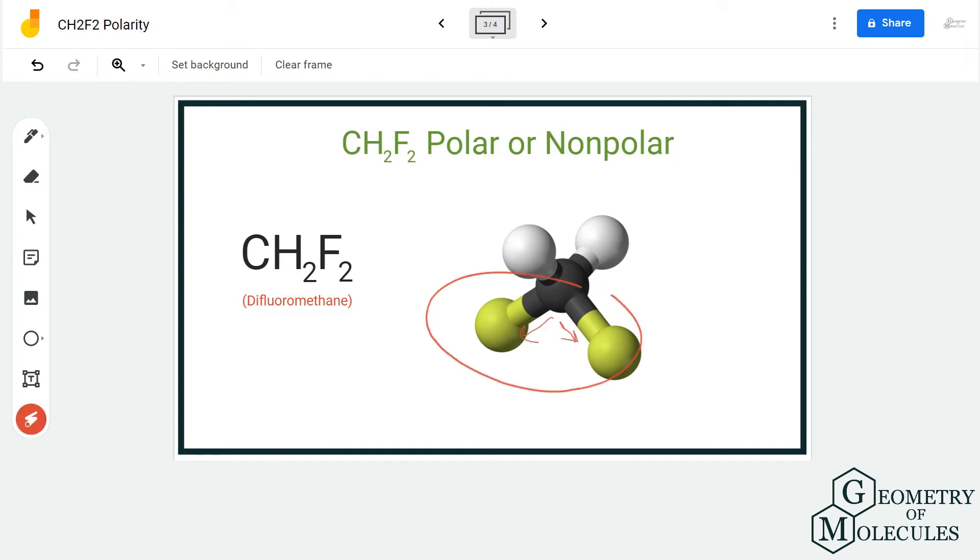These net dipole moments do not cancel out each other. If they were on the opposite side, it might have canceled out each other, but because the fluorine atoms are on the same side, it sums up. As a result, there is a net dipole moment in this molecule.